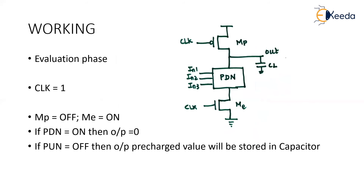When the clock is turned to one, we move into the evaluation phase. Giving one to the PMOS turns it off, and giving one to the NMOS turns it on. Therefore, MP is now off — there is no direct connection between VDD and the output.